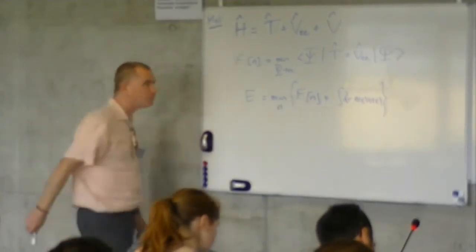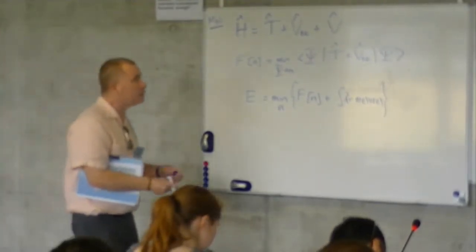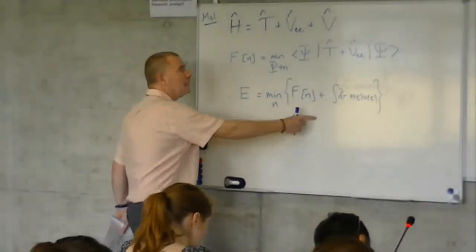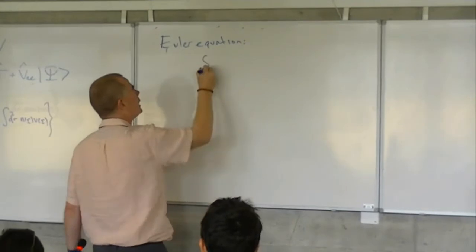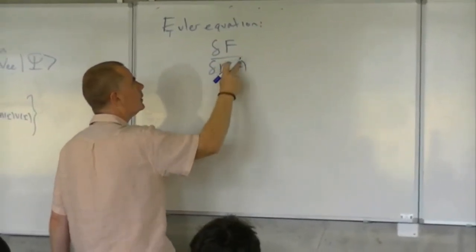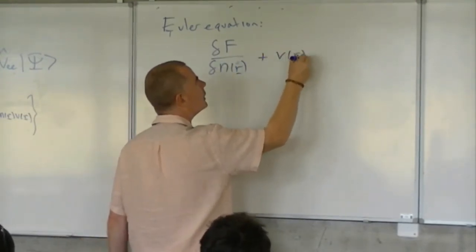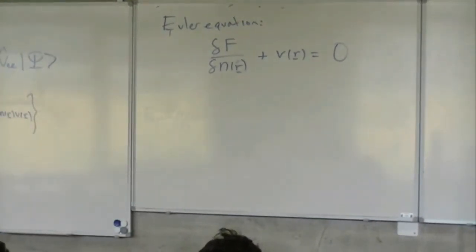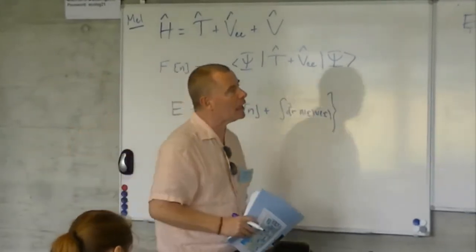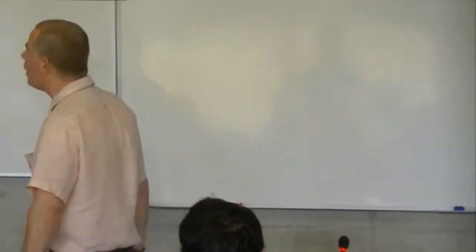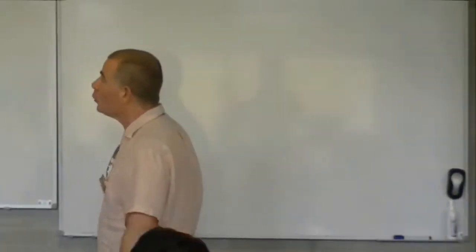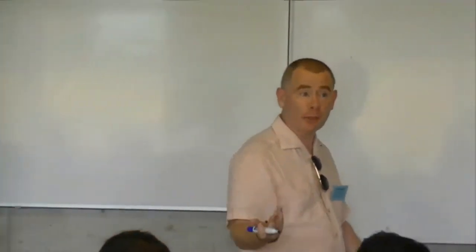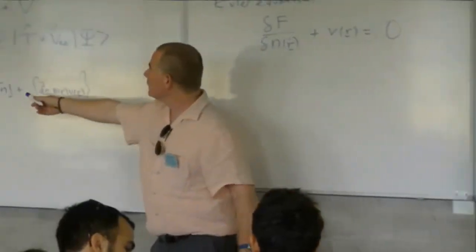I'm going to add one more line to that before I start the Kohn-Sham equations. Which is that, if you want to find that minimum, you learn to do the Euler equation — which is that the functional derivative of F with respect to the density, evaluated at R, plus V of R equals zero. And we differentiate this guy and differentiate that guy. I haven't written in anything like a chemical potential because if we keep the number of particles fixed, then the constant in this minimization is arbitrary, so I just choose it to be zero.